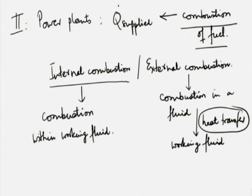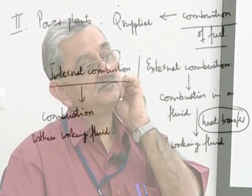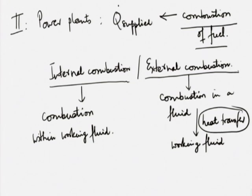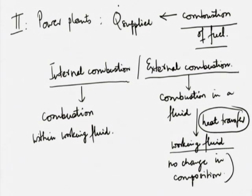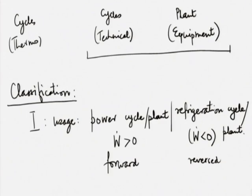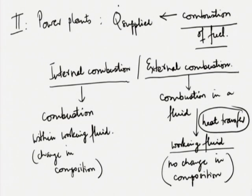In external combustion, there is a process of heat transfer involved. For example, in a steam power plant, you have a boiler with a separate furnace, and coils of water absorb heat and become steam. Combustion does not take place within the water or within the confines of the steam — that is an external combustion plant. Because of this heat transfer to the working fluid, there is no change in composition of the working fluid, whereas in internal combustion there will be a change in composition.